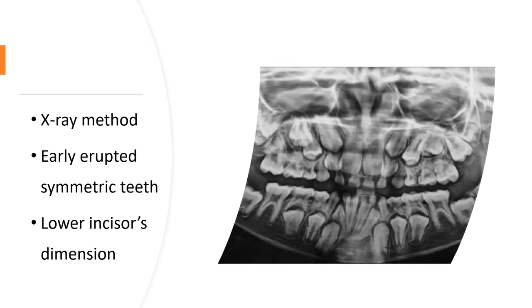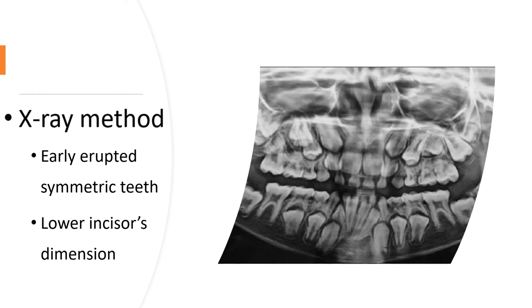To determine the size of erupted teeth in the alveolar bone, you can use the panoramic or periapical radiograph. First, measure the mesiodistal width of a tooth directly on the model. Measure the same tooth dimension on the X-ray and calculate the magnification coefficient. Then, measure the mesiodistal width of the unerupted teeth on the X-ray and calculate the real size with the help of the magnification coefficient.